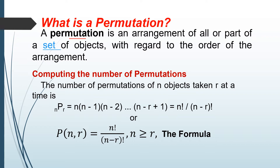So computing the number of permutations: the number of permutations of n objects taken r at a time is equal to n times (n minus 1) times (n minus 2) and so on. Or, P(n, r) equals n factorial over (n minus r) factorial, where n is greater than or equal to r. That is the formula.